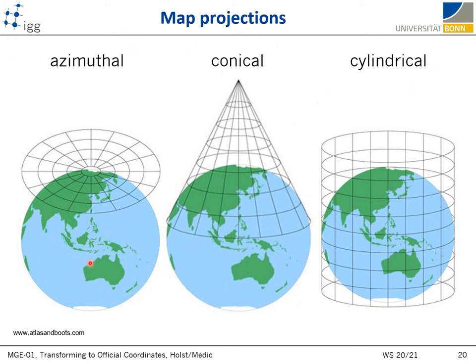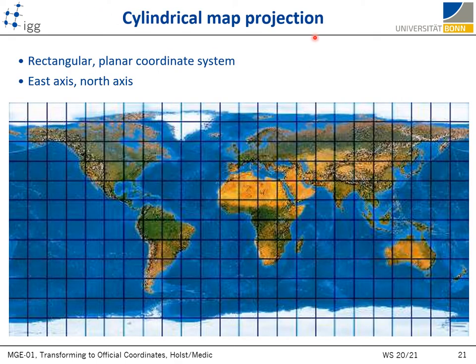Azimuthal projections are most frequently used to map the polar regions. Conical projections are frequently used in aviation, although Lambert conformal conic projection is also used for some official maps in some countries. The most widespread are cylindrical projections, which are used to transform 3D coordinates into a rectangular planar coordinate system, where Earth's meridians and parallels are mapped as straight parallel lines following the main coordinate axes in the direction of east and north.